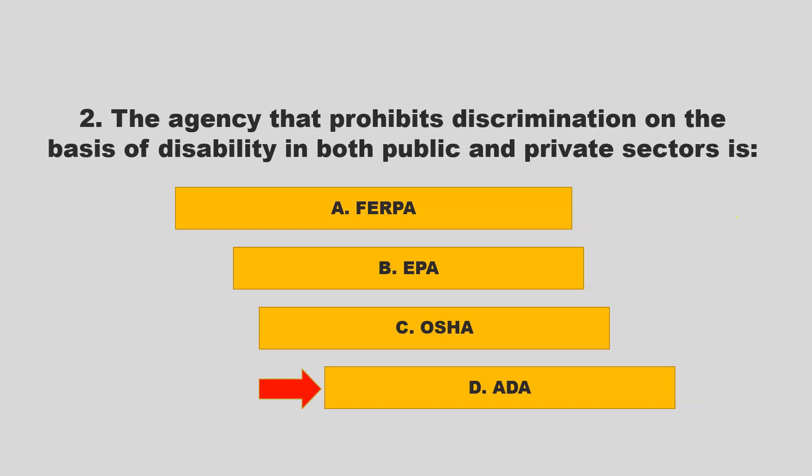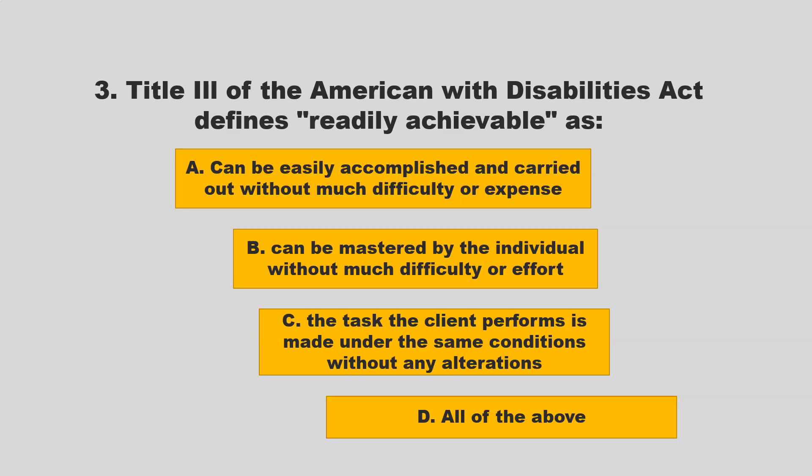Title III of the Americans with Disabilities Act defines 'readily achievable' as: A) can be easily accomplished and carried out without much difficulty or expense; B) can be mastered by the individual without much difficulty or effort; C) the task the client performs is made under the same conditions without any alterations; D) all of the above. If you chose A — can be easily accomplished and carried out without much difficulty or expense — you are correct.